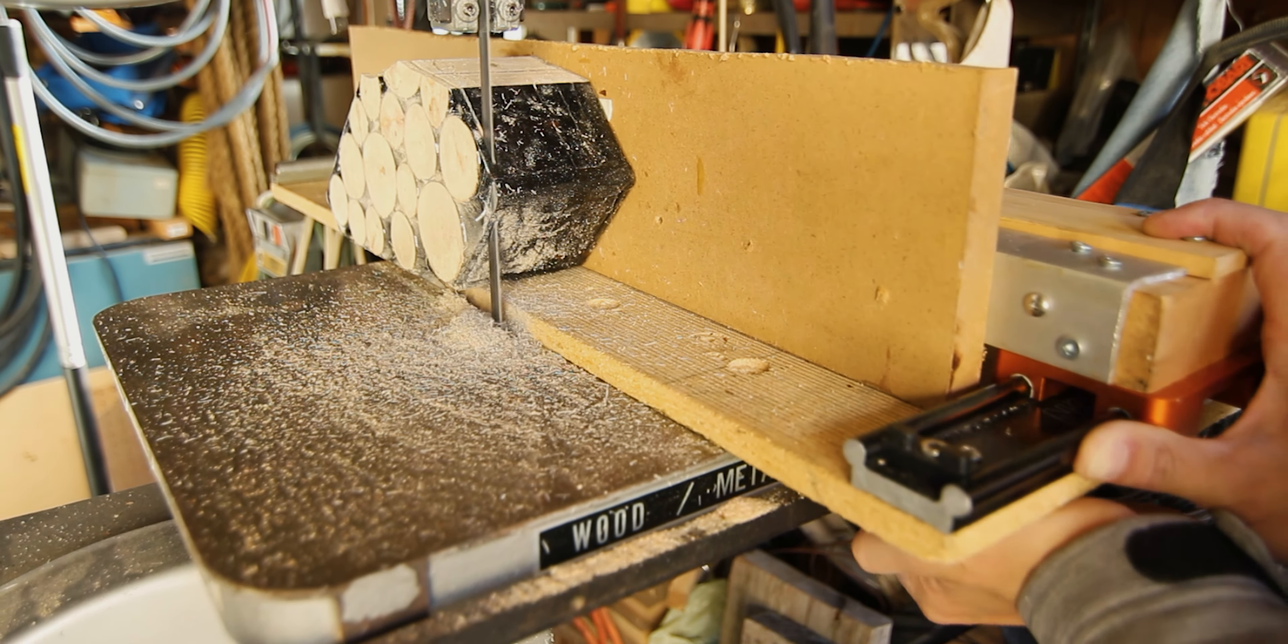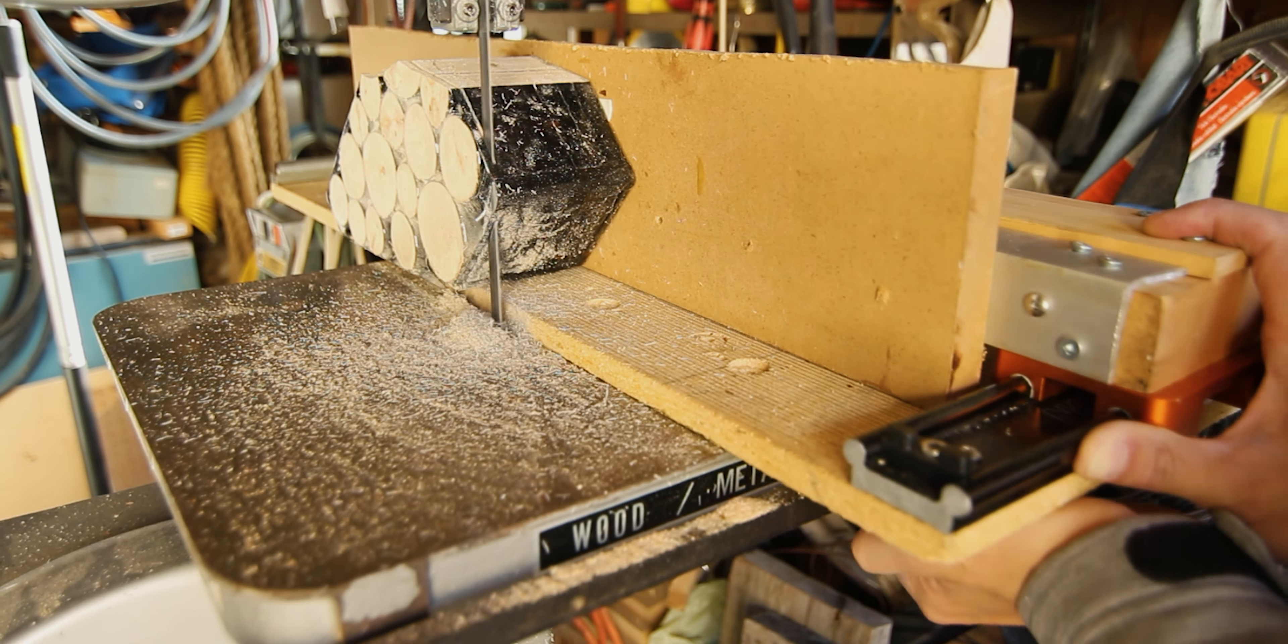Before I slice out my fin panels, I'm going to trace my fin template on top of the block. I'll then take my block over to the bandsaw and trim off any excess material around the fin template.